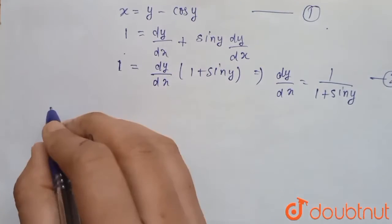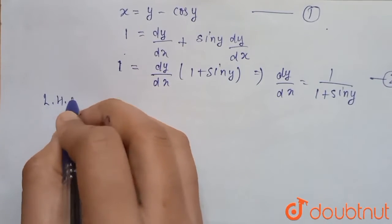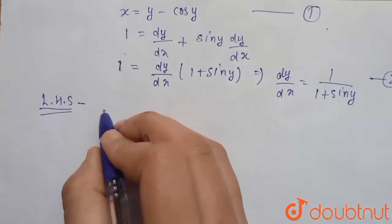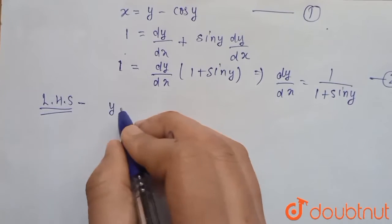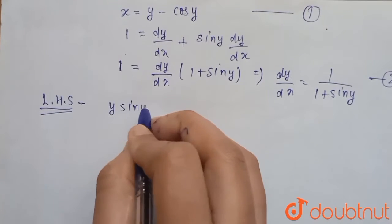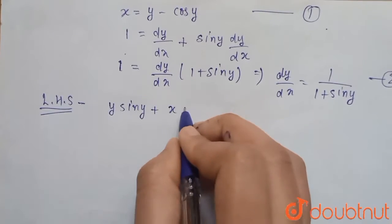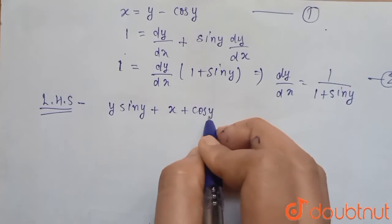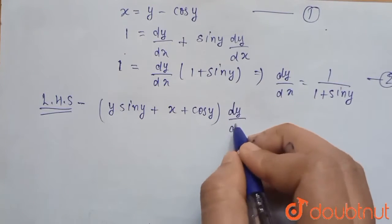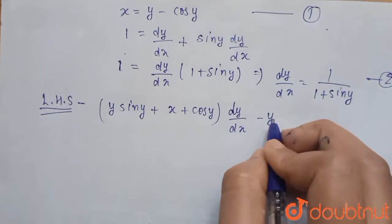Now, see in left hand side, our left hand side is y sin y plus x plus cos y into dy upon dx minus y.